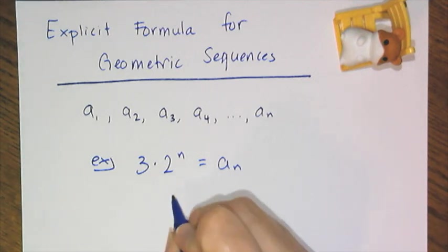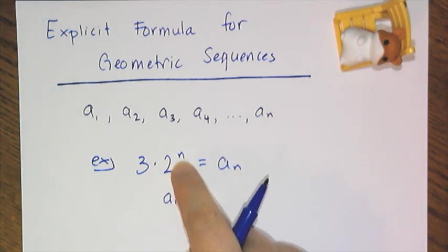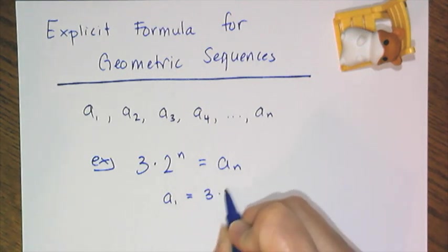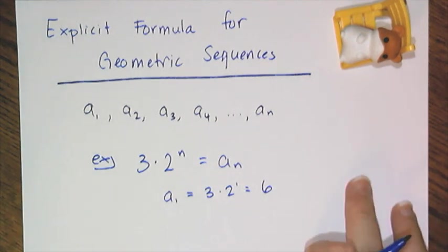If I want to find the first term in the sequence, or a sub 1, I substitute a 1 in for n. 3 times 2 to the first power, simplify, and I get my first term, which in this case is 6.